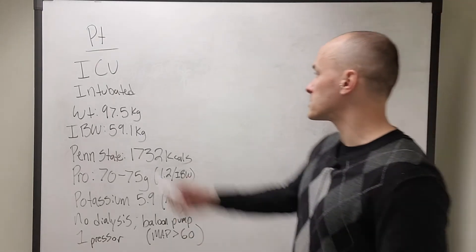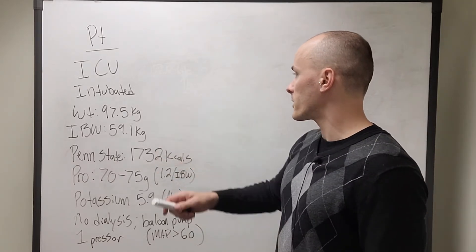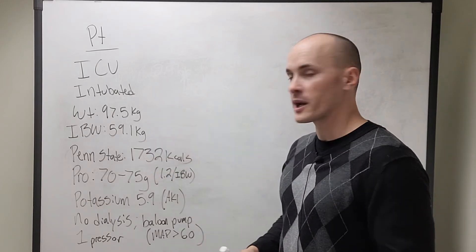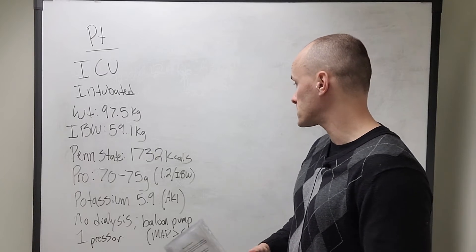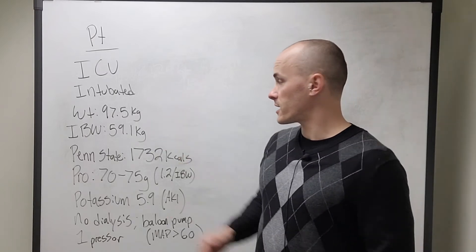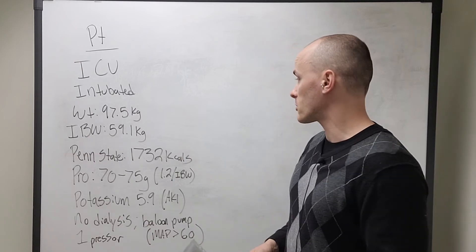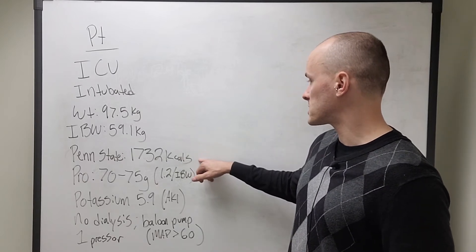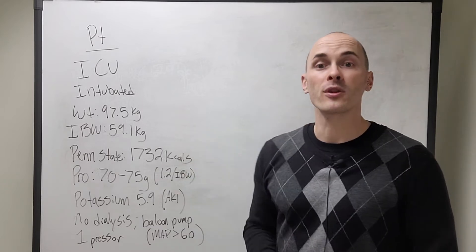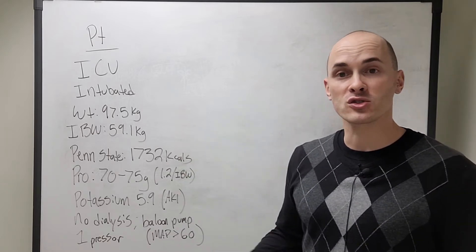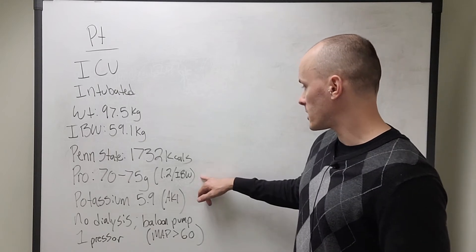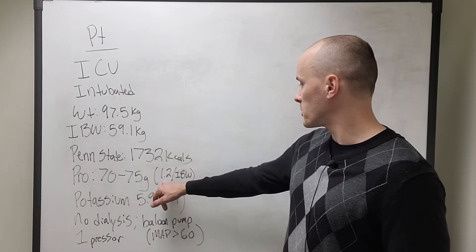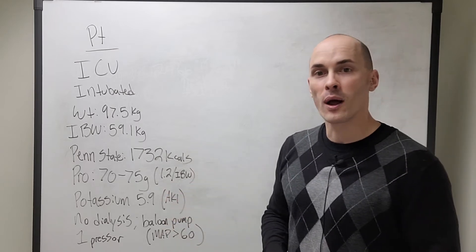We have an ICU patient. They came in with a heart attack. They're intubated. Their current weight is 97.5 kilograms, but their ideal body weight is 59.1 kilograms. I took the vent data as well as their T max, their height and weight and gender. I used the Penn State equation and calculated out to 1732 kcals. Remember the Penn State equation does not need to be modified for stress or activity factors. I've decided a good protein number for them is going to be 70 to 75 grams per day, which is roughly 1.2 grams per kilogram ideal body weight.